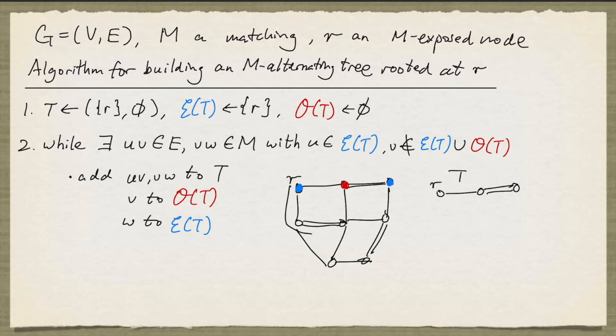Next, I can add this pair of edges to T, and so now my T looks like this. And this is now in the even set, and this is in the odd set.